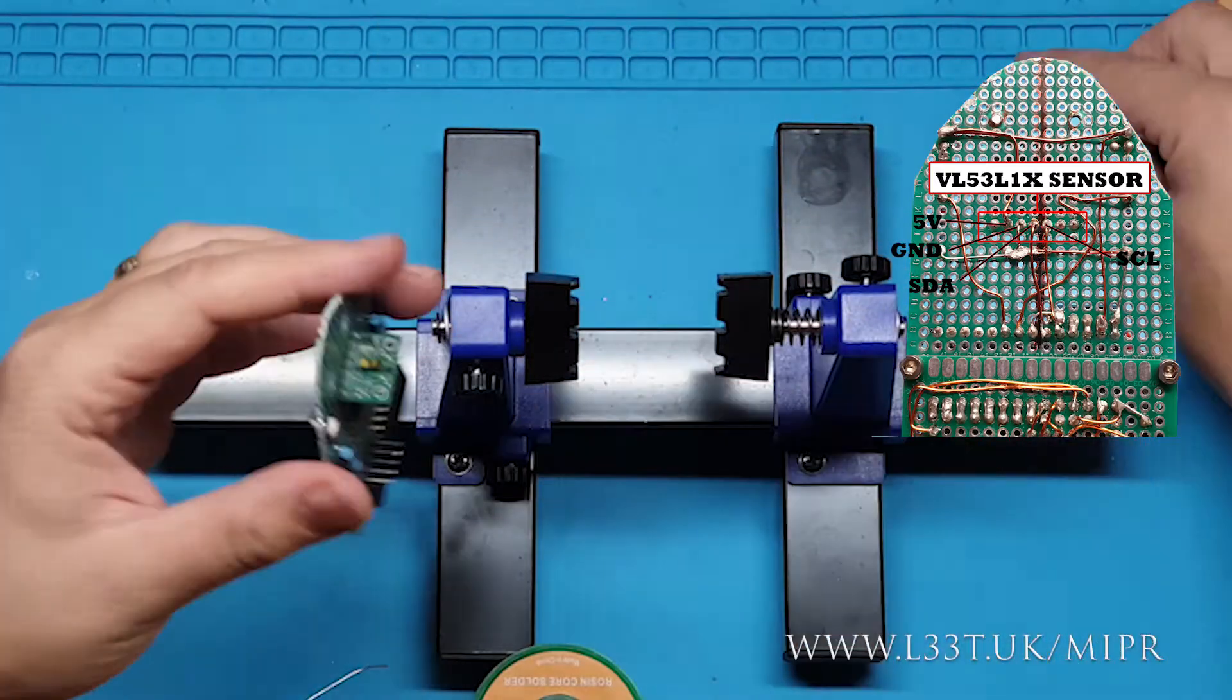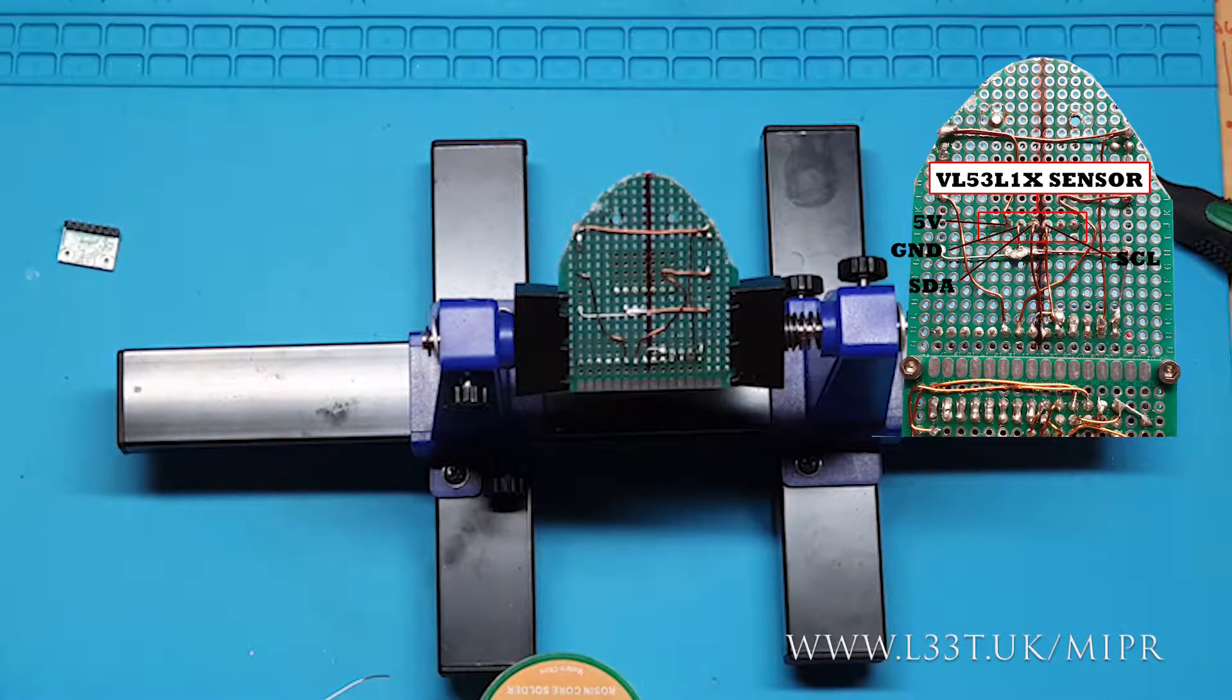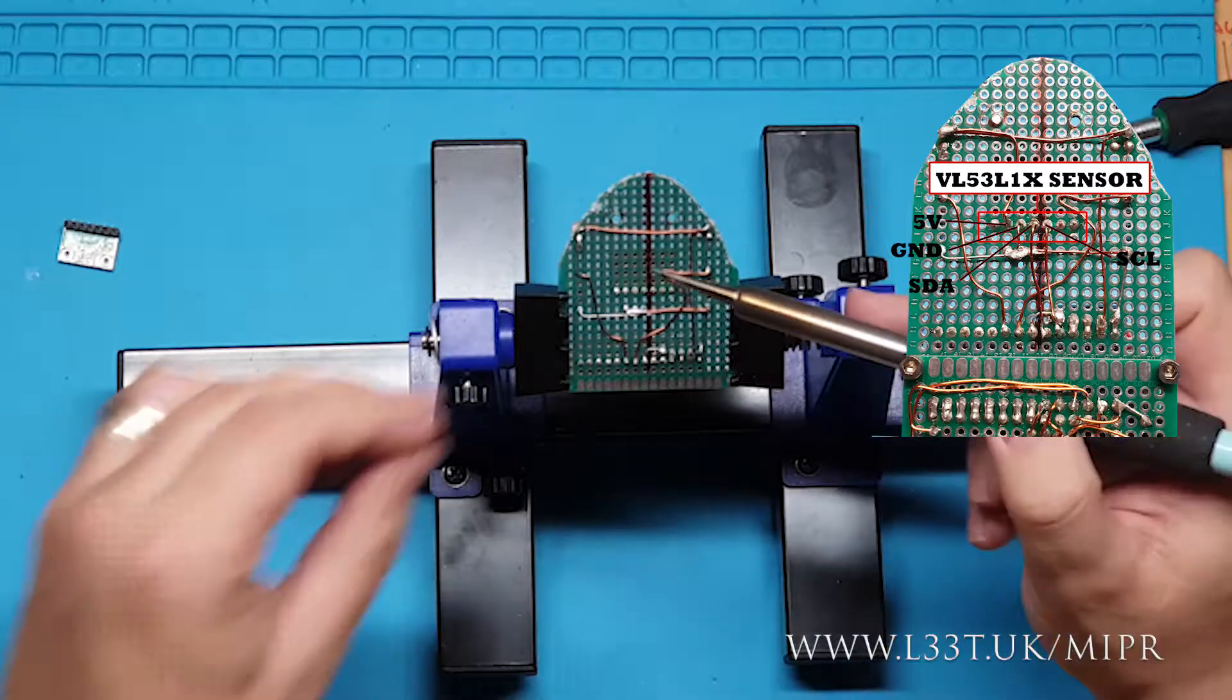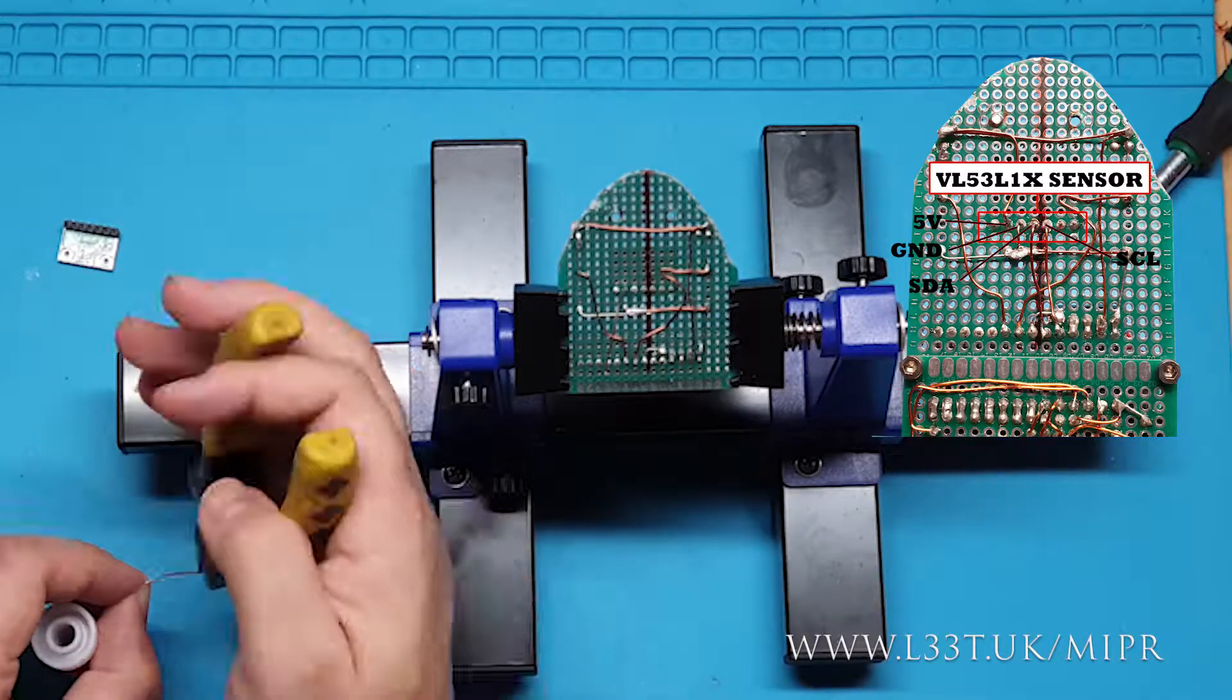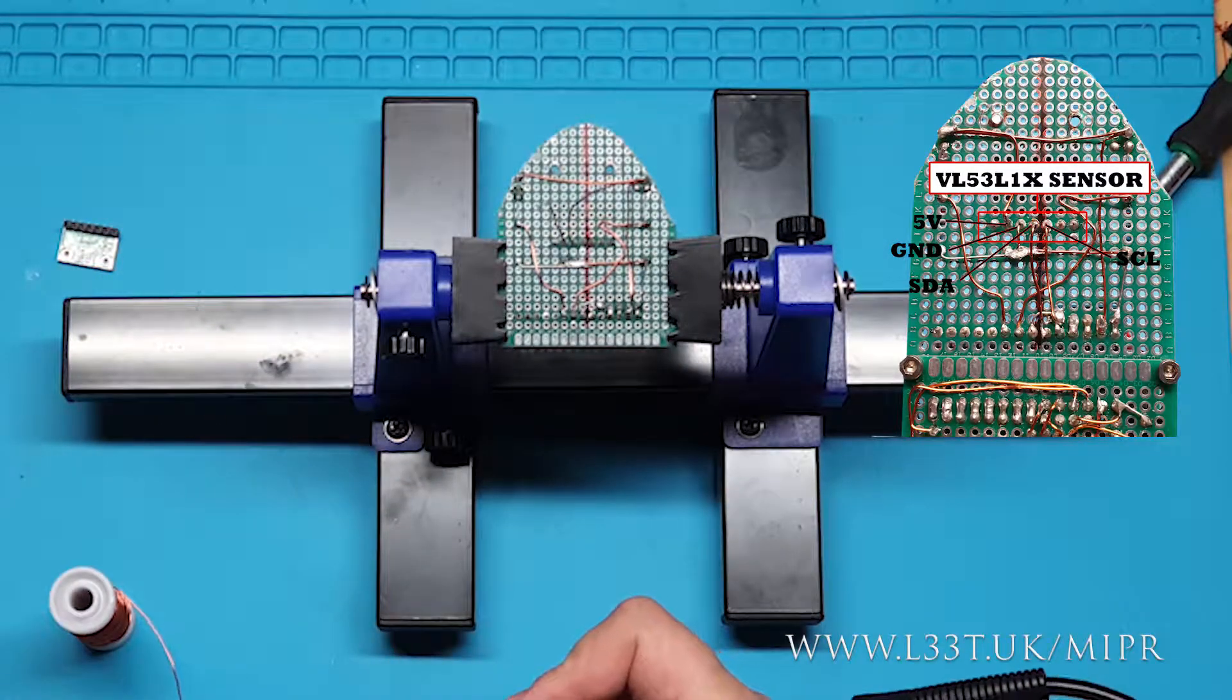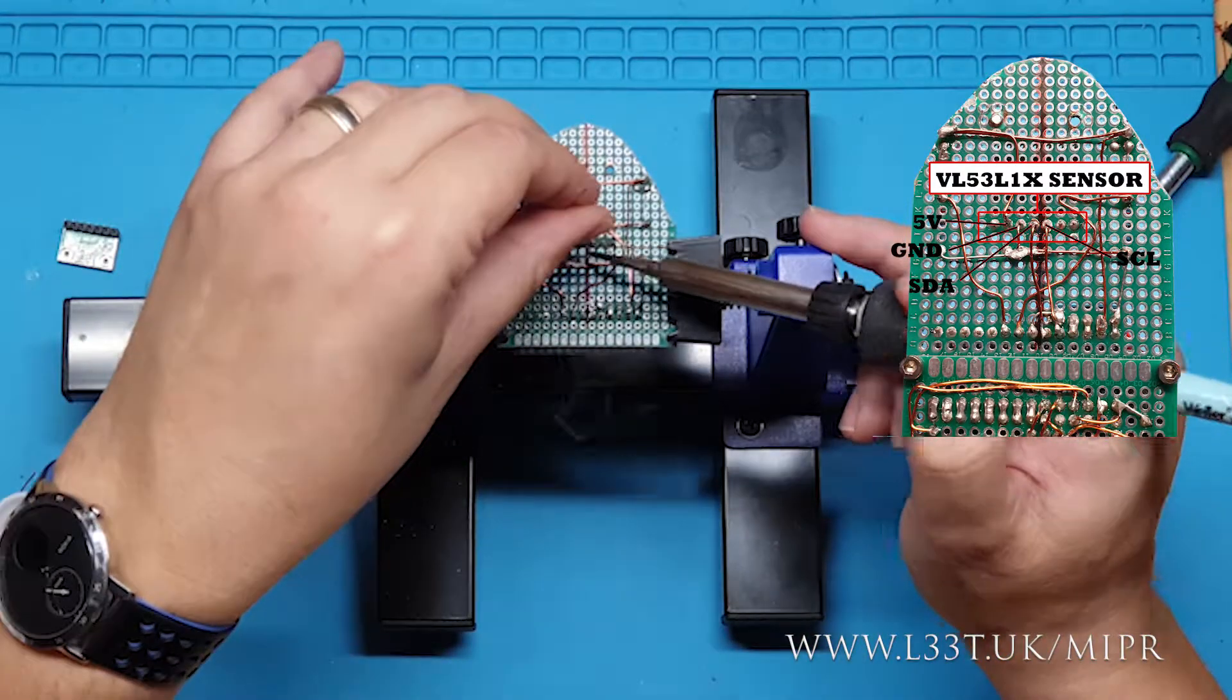Connecting this sensor will be a breeze. All we need to do is attach the 5 volts, ground, SDA and SCL pins. SDA is the A4 pin on the Arduino which is pin 6 on the auxiliary connector. SCL is pin A5 on the Arduino which is pin 5 on the auxiliary connector. Once these pins are connected we will attach the caster wheel and attach the board to Mipper.